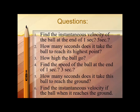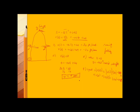Question five: how many seconds does it take the ball to reach the ground? When the ball reaches the ground, s = 0. So: −16t² + 64t = 0. Factoring out −16t: −16t(t − 4) = 0. This gives t = 0 or t = 4 seconds. Therefore, it takes four seconds for the ball to reach the ground.